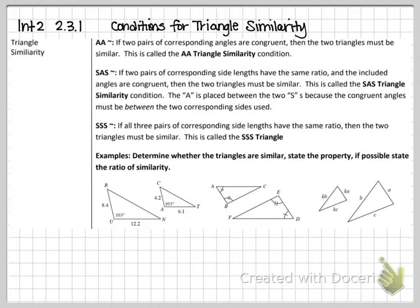This is integrated 2.3.1: conditions for triangle similarity. We have a bit more limitation here with similarity as opposed to congruence. With similarity we can use angle-angle similarity — it's very nice, you don't have to find all three angles. Because of triangle angle sum, the third one will match no matter what, so two pairs of corresponding angles being congruent is sufficient.